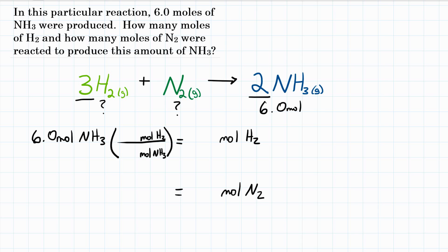So in our conversion factor, for every 2 moles of NH3, we're going to get 3 moles of H2. We're going to multiply 6 by 3/2, and that gives us 9.0 moles of H2.